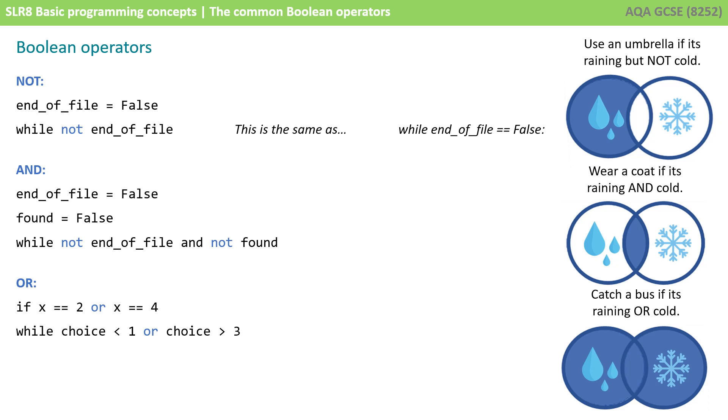You could use it in an if statement. For example, if x equals 2 OR x equals 4, then run the code for the if statement. Or you could use it in the checking clause of a while loop. While choice is less than 1 OR choice is greater than 3. Only one of those conditions has to be true and the while loop would execute.